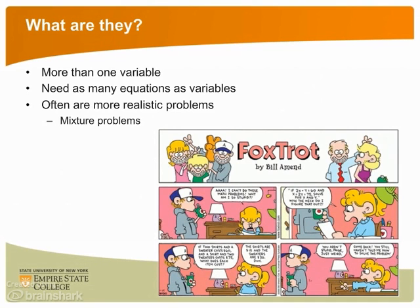A system of equations happens when you have more than one variable. In the comic, the variables are the costs of a sweater and of a shirt. To successfully solve a system of equations, you must have as many equations as you have variables. So you would need three equations to solve for three variables, or twenty equations to solve for twenty variables.